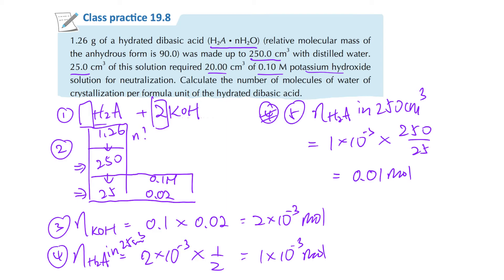And finally, you are going to find out the n right there. So we say that H₂A is 90. So 90 plus 18n equals to... wait, divided by 0.01. So if you solve for n, then you can find that it will equal to 2 right there. So the number of water of crystallization in it will be 2.